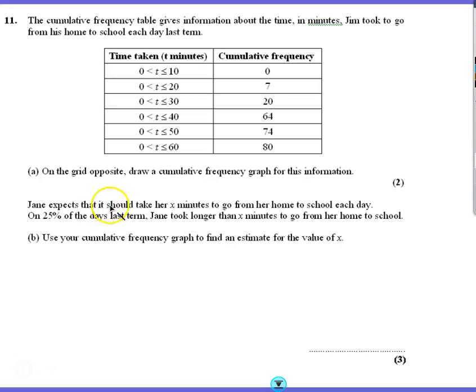It says Jane expects that it should take her X minutes to go from her home to school each day. On 25% of the days last term, Jane took longer than X minutes to go from her home to school. So on a quarter of the days, it took her longer than X minutes. Use your cumulative frequency graph to estimate the value of X.